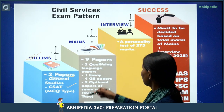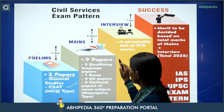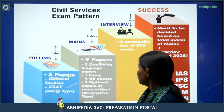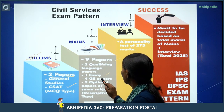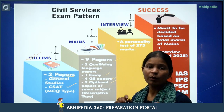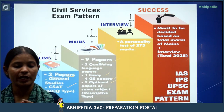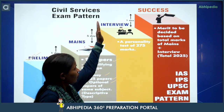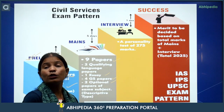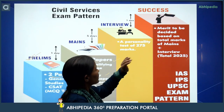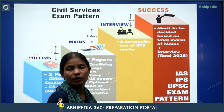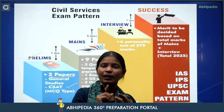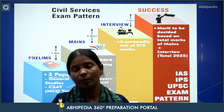Now the second stage is mains. Mains ke andar aapke nine papers hain. Two are of qualifying nature — jo aapke language papers honge. Then essay writing, four GS papers, and two optional papers of the same subject. Joh aapka optional subject hai, uske aapke do papers hain. Then you go for interview or personality test, that is 275 marks. Then your final selection is based on the merit decided in mains and interview. Mains or interview ke andar aapke jo marks hain, uske base pe aapki merit banti hai.